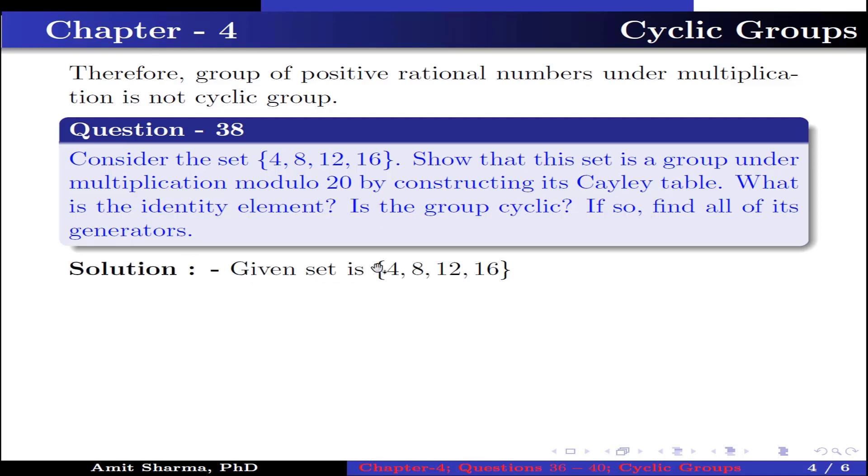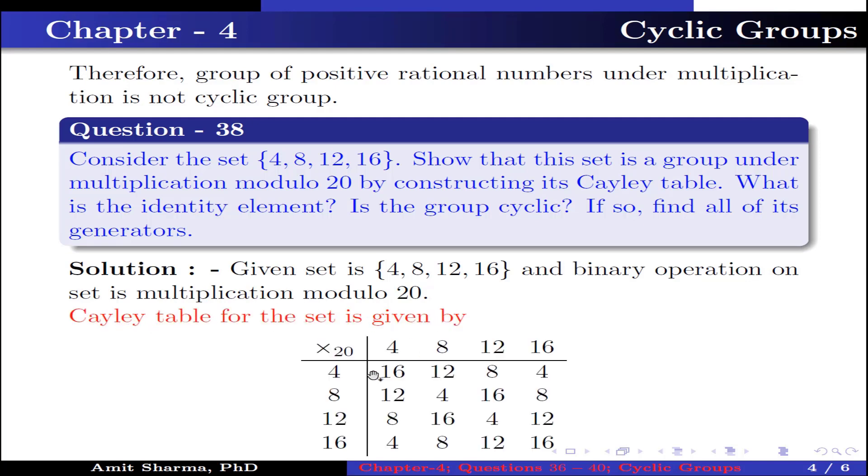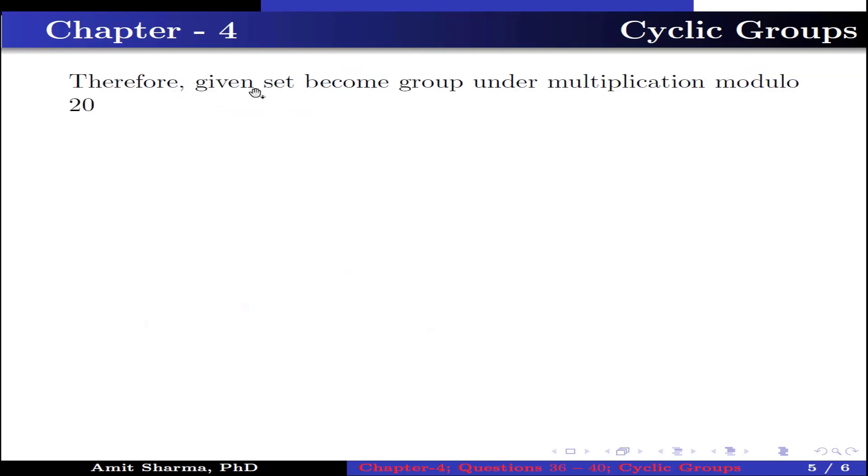Now the given set contains the elements 4, 8, 12, 16, and the binary operation on the set is multiplication modulo 20. Now the Cayley table for the set is given by this. It can be easily seen that all the elements satisfy the closure axiom. This implies the given set becomes a group under multiplication modulo 20.